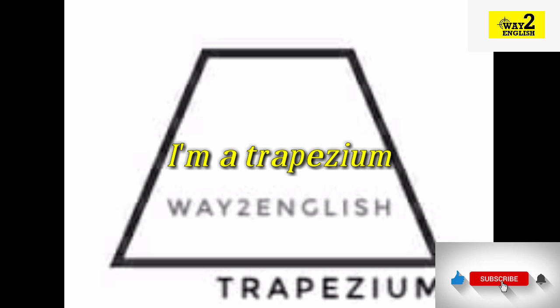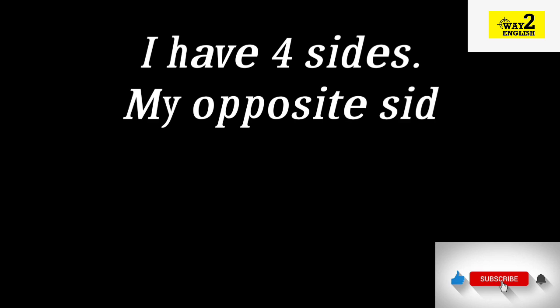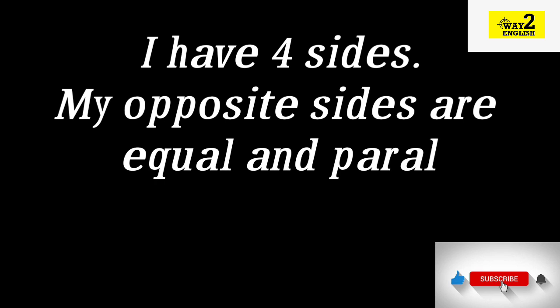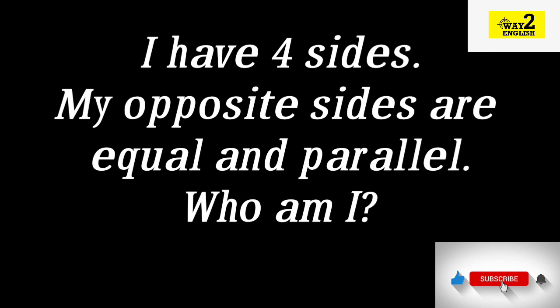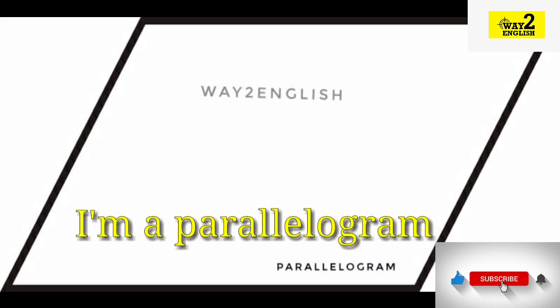I have four sides. I have one pair of parallel sides. Who am I? I am a trapezium. I have four sides. My opposite sides are equal and parallel. Who am I? I am a parallelogram.